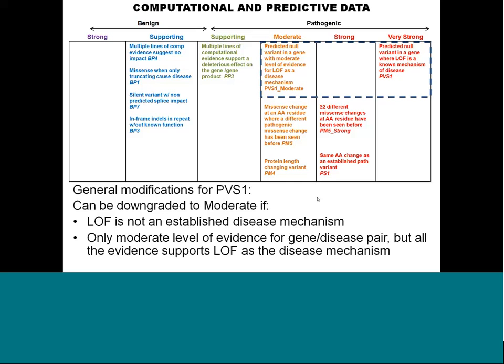PVS1 — predicted null variant where loss of function is a known disease mechanism — can be downgraded to PVS1_moderate in instances where the gene-disease association is definitive but there is only moderate evidence that loss-of-function variants specifically contribute to disease, or where the gene-disease association itself has only a moderate level of evidence. In those cases, using PVS1 at the very strong level would not be appropriate.